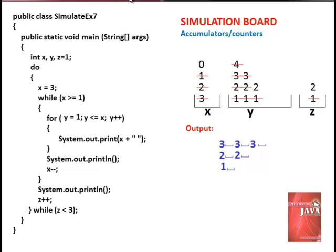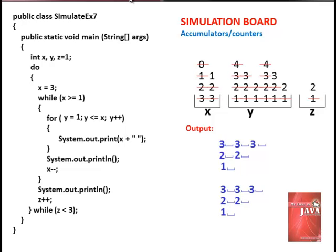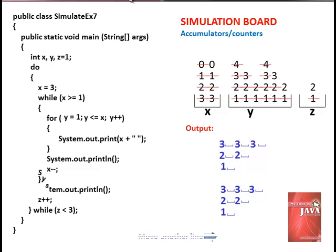Implement again the whole loop and start from the very beginning — it's deja vu once more. After the loop repeats, is 3 less than 3? False — they are equal. Exit the do-while loop.